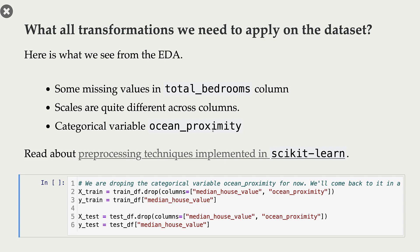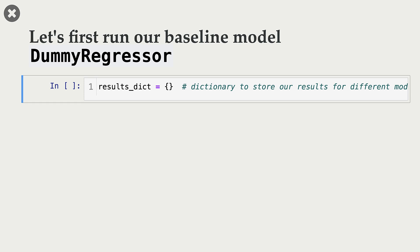For now I'm going to drop the ocean_proximity feature — we will look at that later in the lecture. I'm creating my X_train, y_train, X_test, and y_test. Let's start with a baseline model so that we have a reference point. Since we are working with a regression problem, we will use scikit-learn's DummyRegressor as our baseline model.